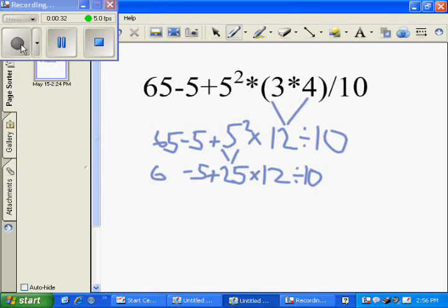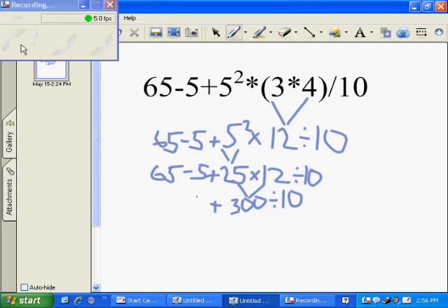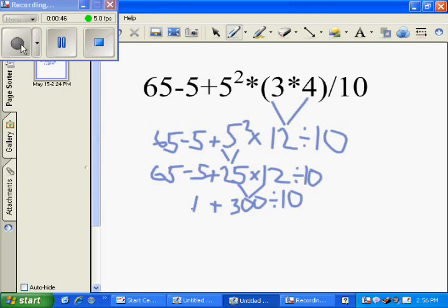Next in PEMDES is M and D for multiplication and division. It doesn't matter which one comes first. You just have to do whatever comes first left to right in the problem. In our problem, 25 times 12, which would equal 300, comes first. Next would be 300 divided by 10, which would equal 30.